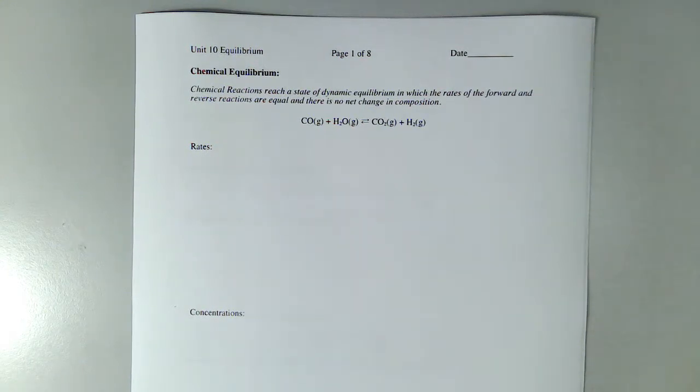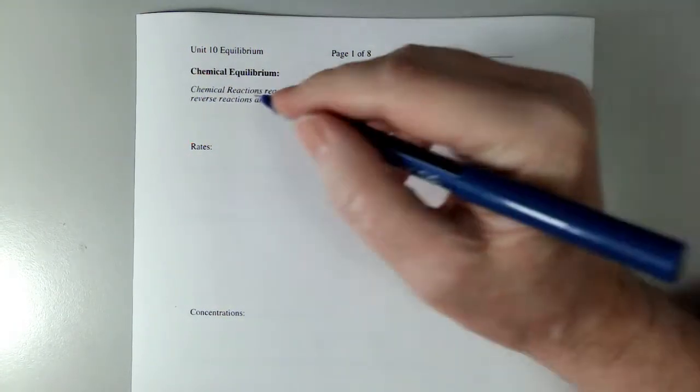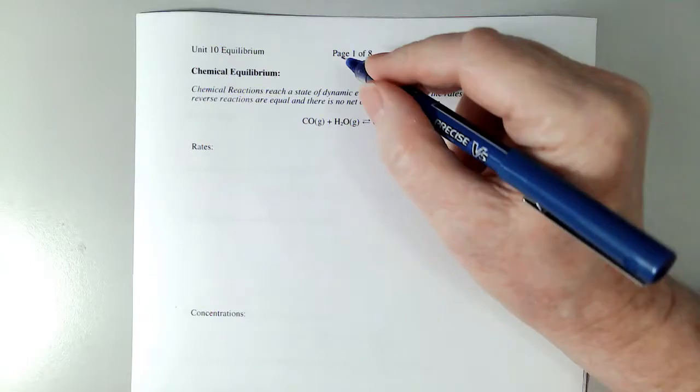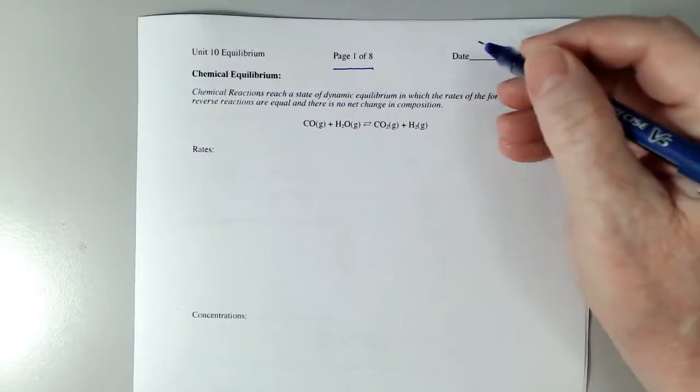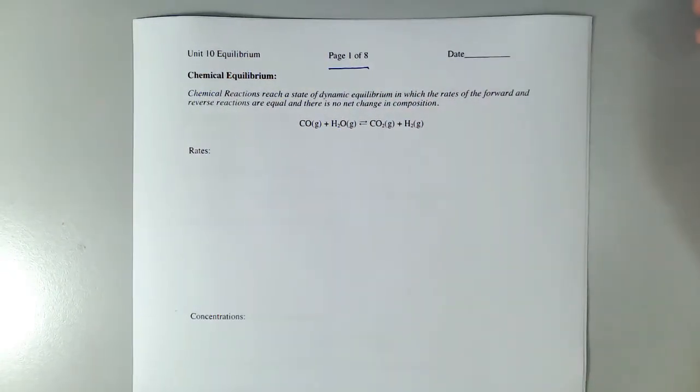Hi, everybody. This is Morgan. We're going to be talking about chemical equilibrium in our new chapter. You should be on the lecture outline that says unit 10 equilibrium, starting at page number one. Now, chemical equilibrium.